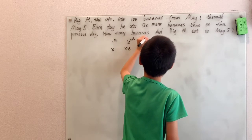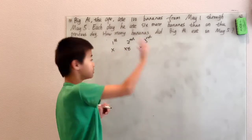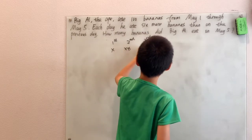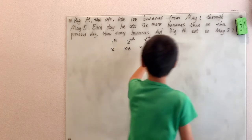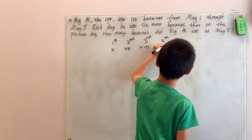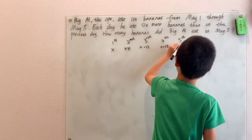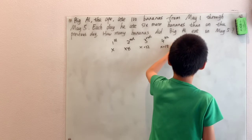Well, on the third day, there's X plus 6 plus 6, which is X plus 12 bananas. On the fourth day, it's X plus 18, and on the fifth day, it's X plus 24.